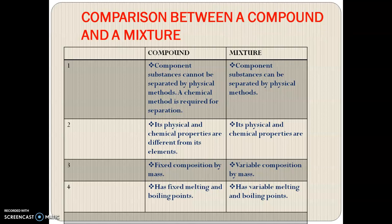Number two: the physical and chemical properties of a compound are different from the reactants — those elements that were reacted together to form that compound. But in a mixture, the physical and chemical properties are just the same as those of the elements that were mixed together. Number three: a compound has a fixed composition by mass, while a mixture has variable composition by mass.